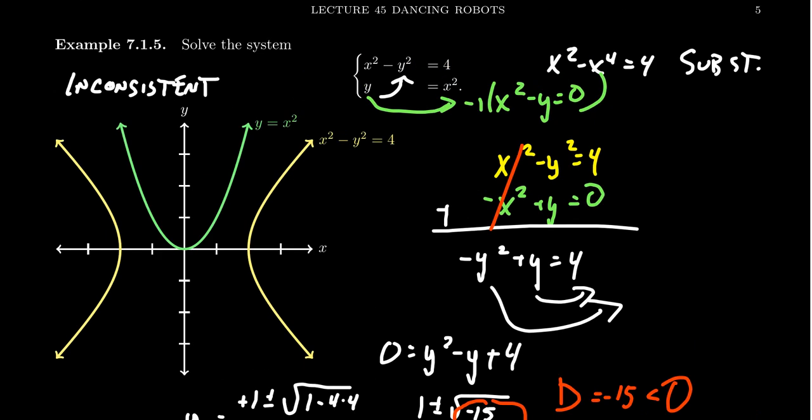Because what does inconsistent mean? Inconsistent means there's no solution. And in this context, it means there's no real solution. So if you have to solve quadratic equations with negative discriminants, that's going to indicate to you that you have no real intersections between your curves.